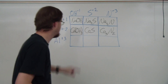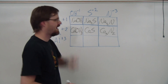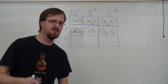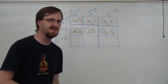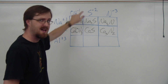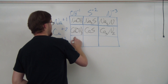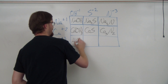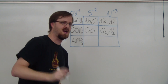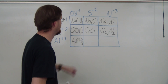Last one: aluminum plus three and hydroxide negative one. So one and three — lowest common multiple is three. So I need three hydroxides. Al(OH)3 — because it's a polyatomic, we've got to keep it all together.